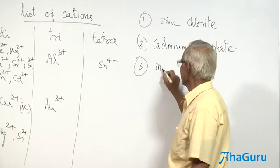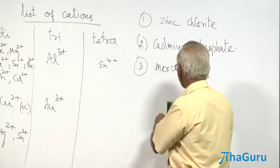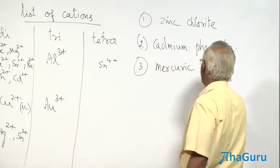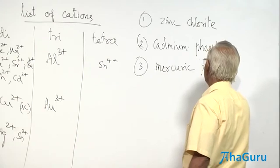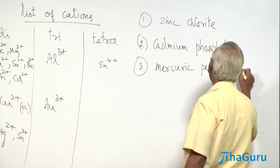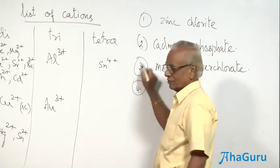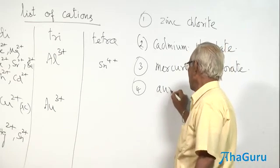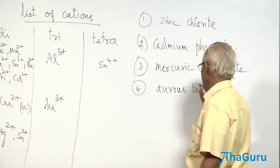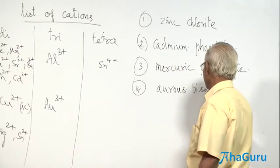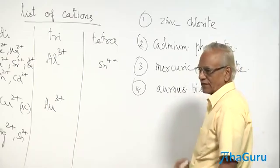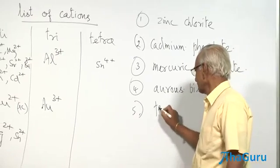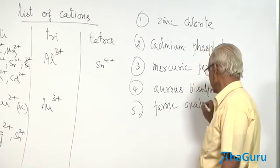3. Mercuric perchlorate. 4. Aurous bisulfate. Bisulfate is also known as hydrogen sulfate. Number 5, ferric oxalate.